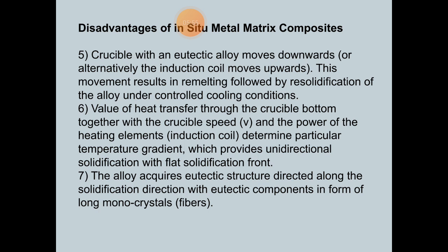The values of heat transfer through the crucible bottom together with the crucible speed, and the power of the heating elements (induction coil), determine a particular temperature gradient which provides unidirectional solidification with a flat solidification front. The alloy acquires a eutectic structure directed along the solidification direction, with the eutectic components in the form of long monocrystalline fibers.